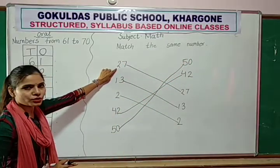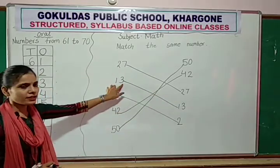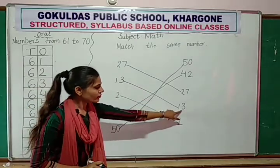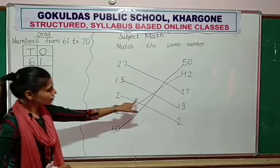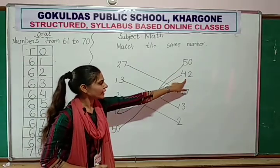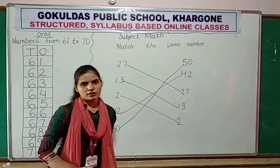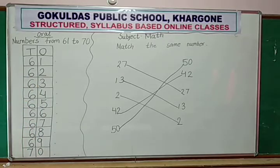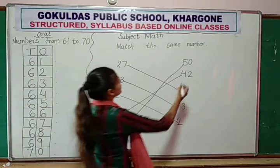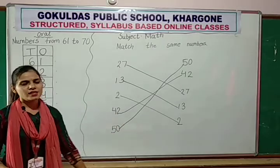So first you match 27. Then 13. Then number 2. Then 42. Then 50. So on your notebook, write down these activities — match the same number. All of you write. First you write down the heading, then write all numbers, and then match the same numbers.